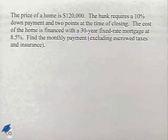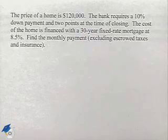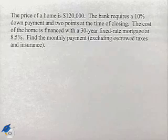Now let's continue with the problem dealing with buying a new home by determining the monthly payment. The price of a home is $120,000. The bank requires a 10% down payment and two points at the time of closing.